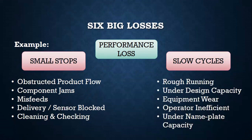Under slow cycles, examples are rough running, under design capacity, equipment wear, inefficient operator, and under nameplate capacity. For those not aware of nameplate capacity, it is also known as rated capacity, nominal capacity, or installed capacity of equipment.